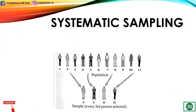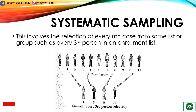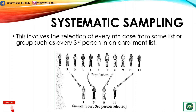Lastly, we have systematic sampling. This involves the selection of every nth case from some list or group, such as every third person in an enrollment list.